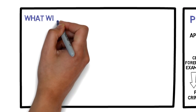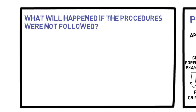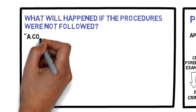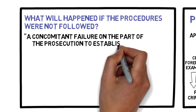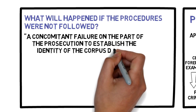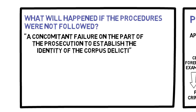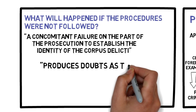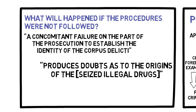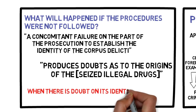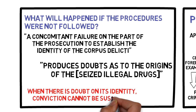What will happen if the procedures were not followed? Failing to comply with the mandate of Republic Act 9165, as amended, implies a concomitant failure on the part of the prosecution to establish the identity of the corpus delicti, and produces doubts as to the origins of the seized illegal drugs. When there is doubt on its identity, conviction cannot be sustained.